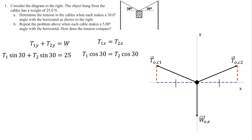The y component is given by the sine of the angle, so T1 sine 30 plus T2 sine 30 equals 25. For the x equation, it'd be T1 cosine 30 equals T2 cosine 30. The reason why we use cosine for the x and sine for the y is because the angle 30 degrees is measured relative to the x axis. Given that T1 cosine 30 equals T2 cosine 30, you can divide both sides by cosine 30, therefore T1 equals T2.